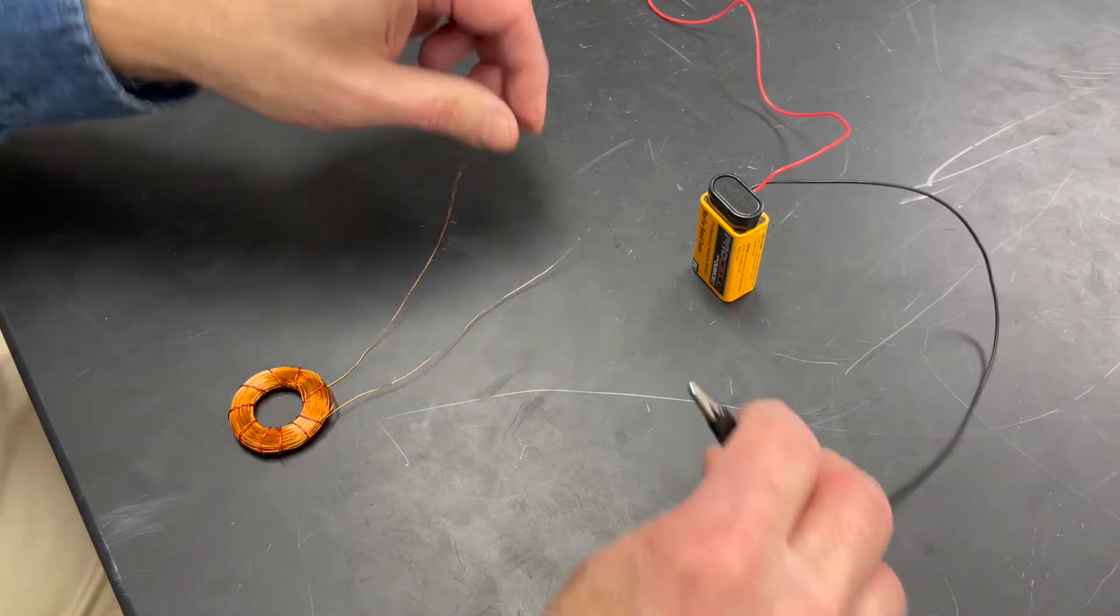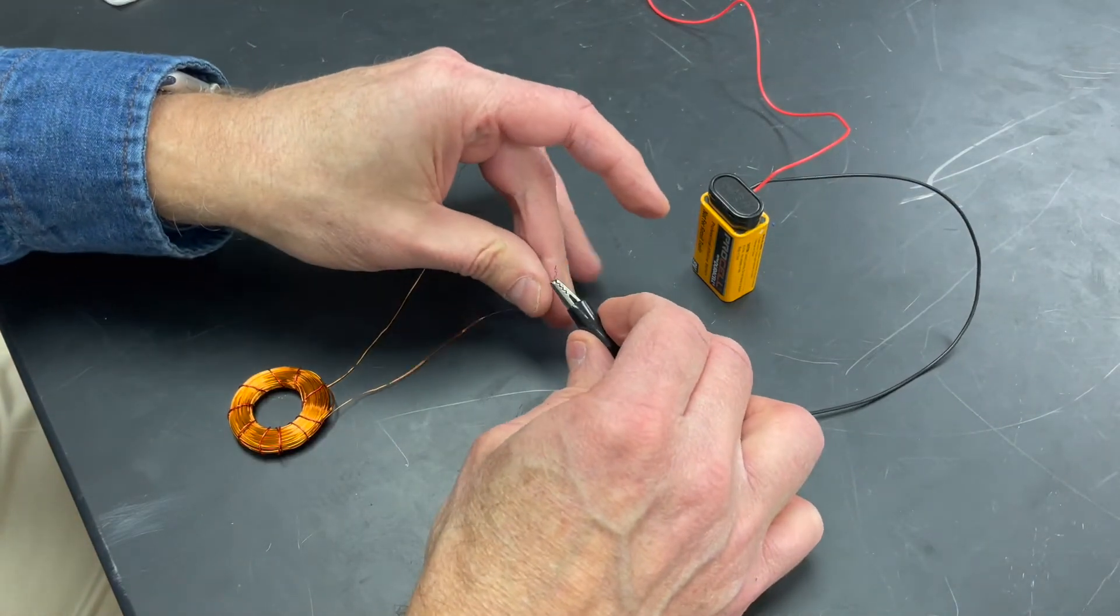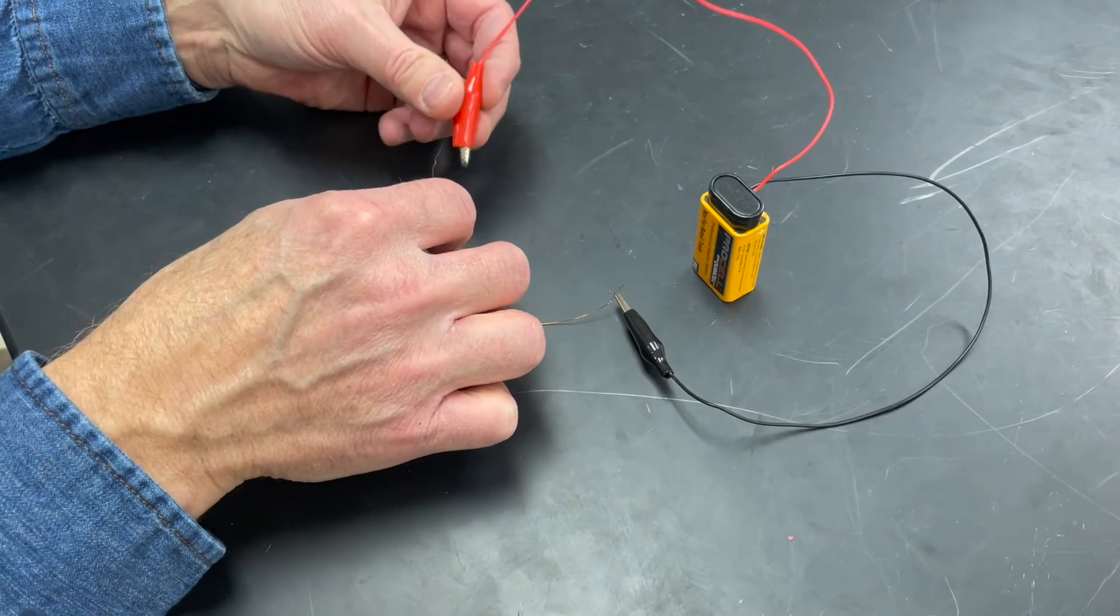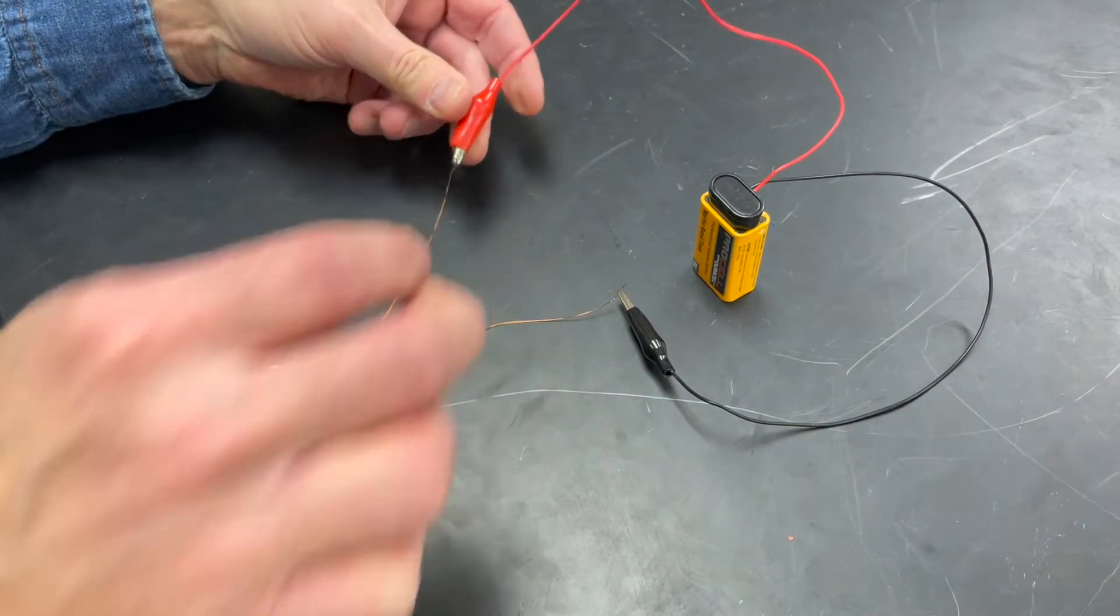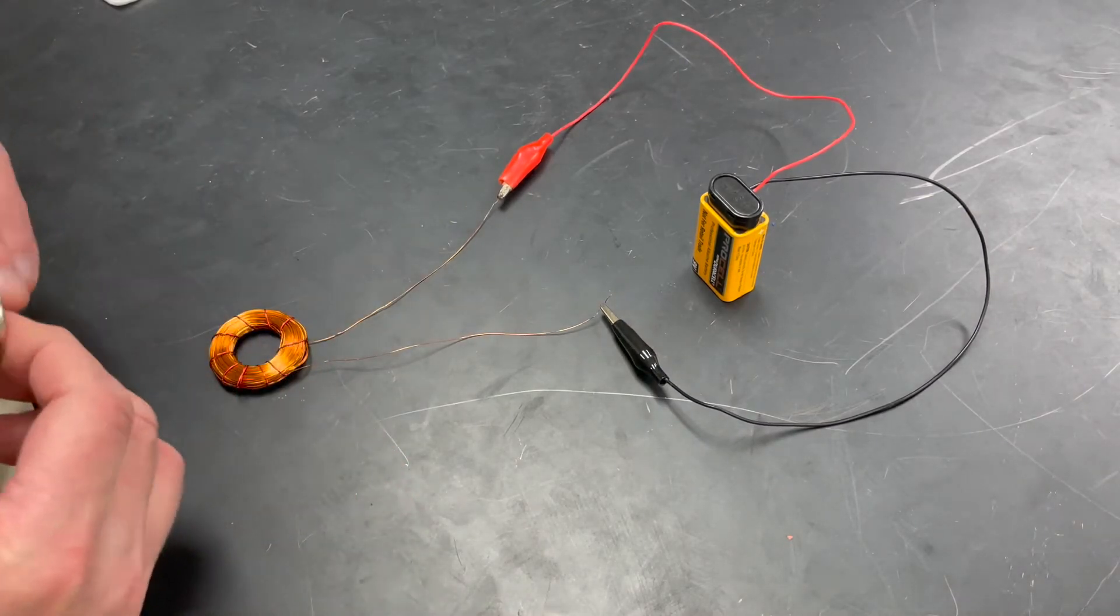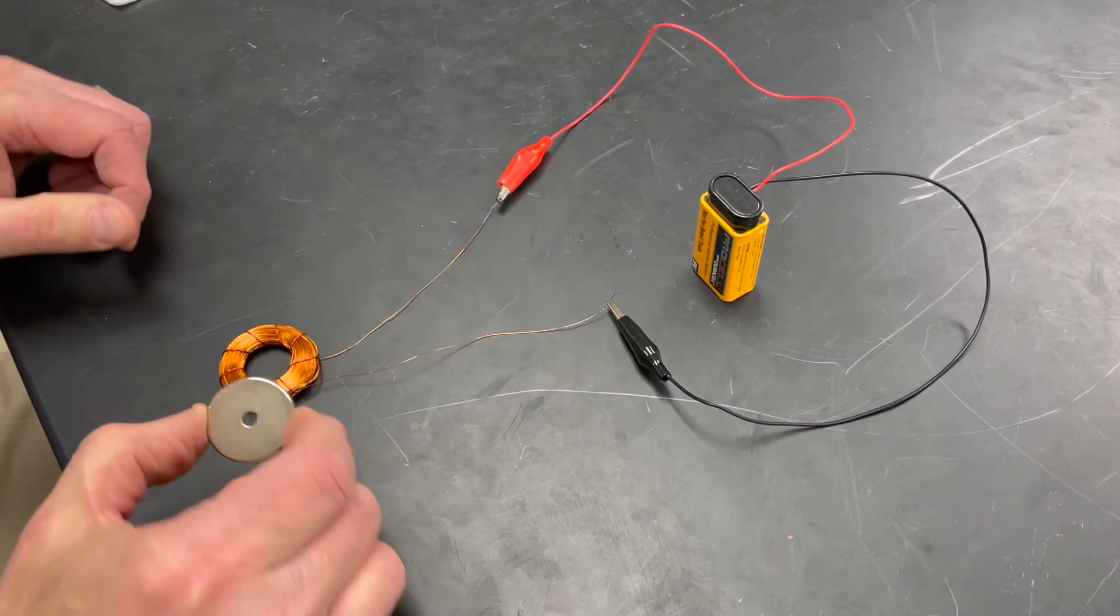But what happens if we run electricity through the coil? As I connect the battery to the copper coil, it now has electrons running through the coil, and it has now become magnetic.